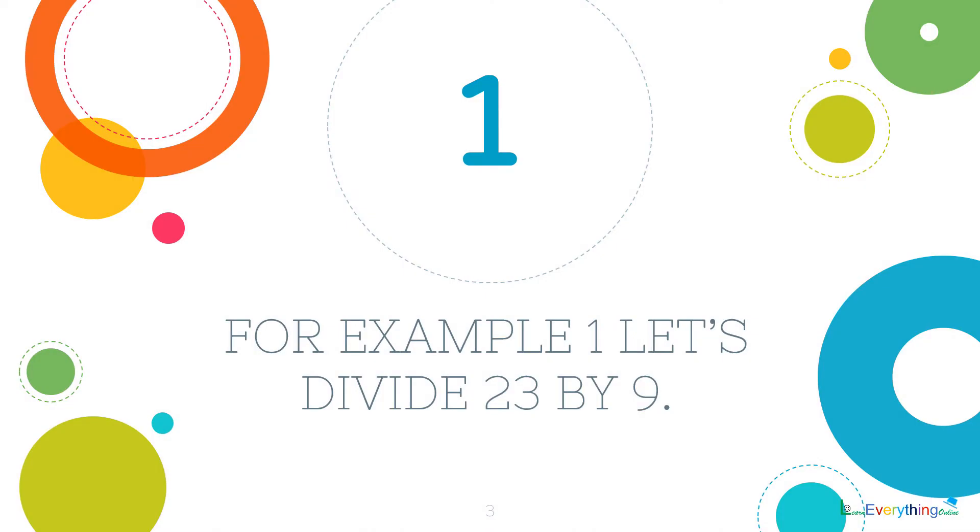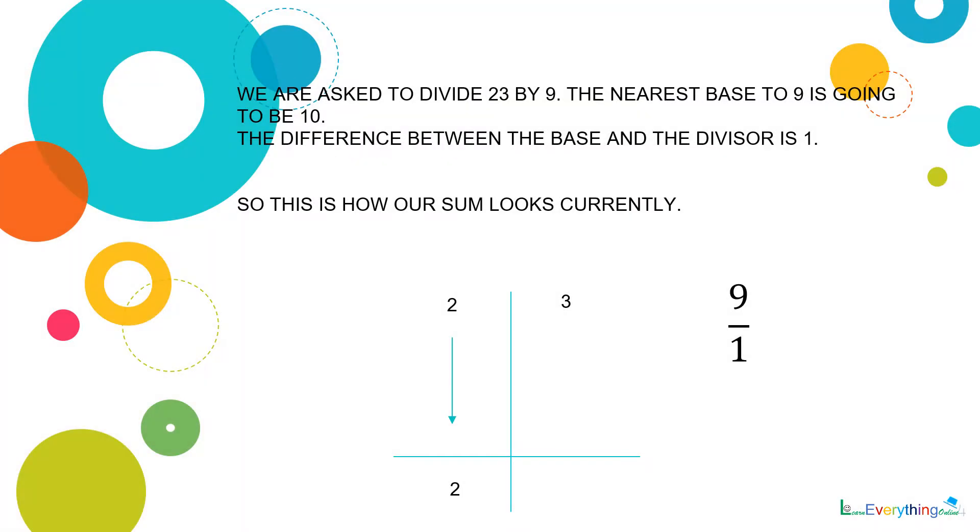For example 1, let's divide 23 by 9. We are asked to divide 23 by 9. The nearest base to 9 is going to be 10. The difference between the base and divisor is 1, which is basically 10 minus 9 equals 1.